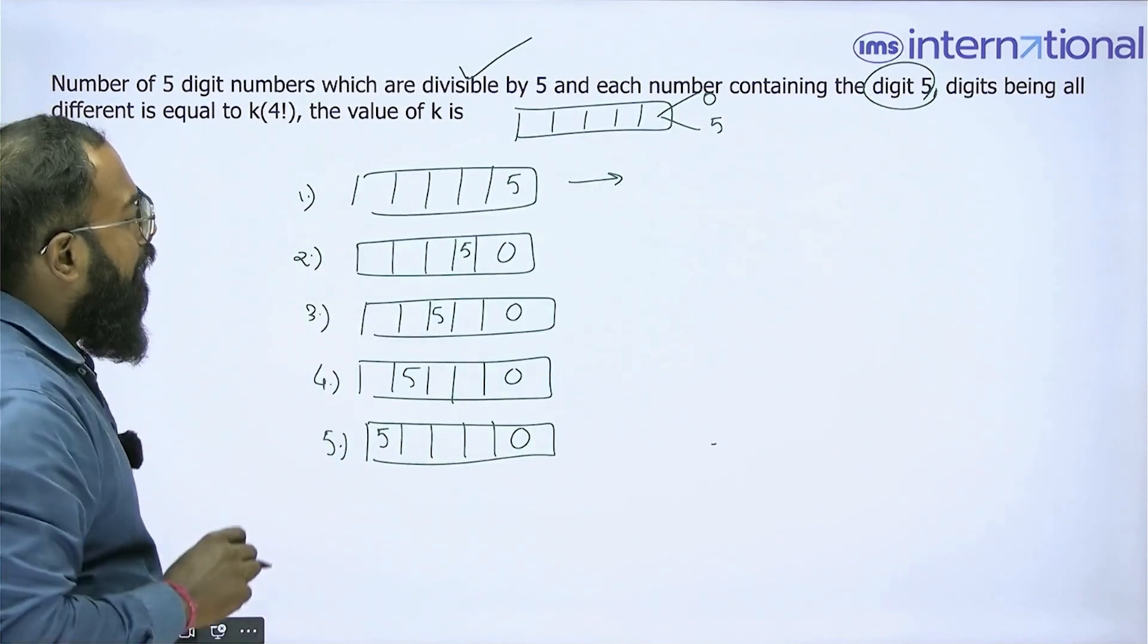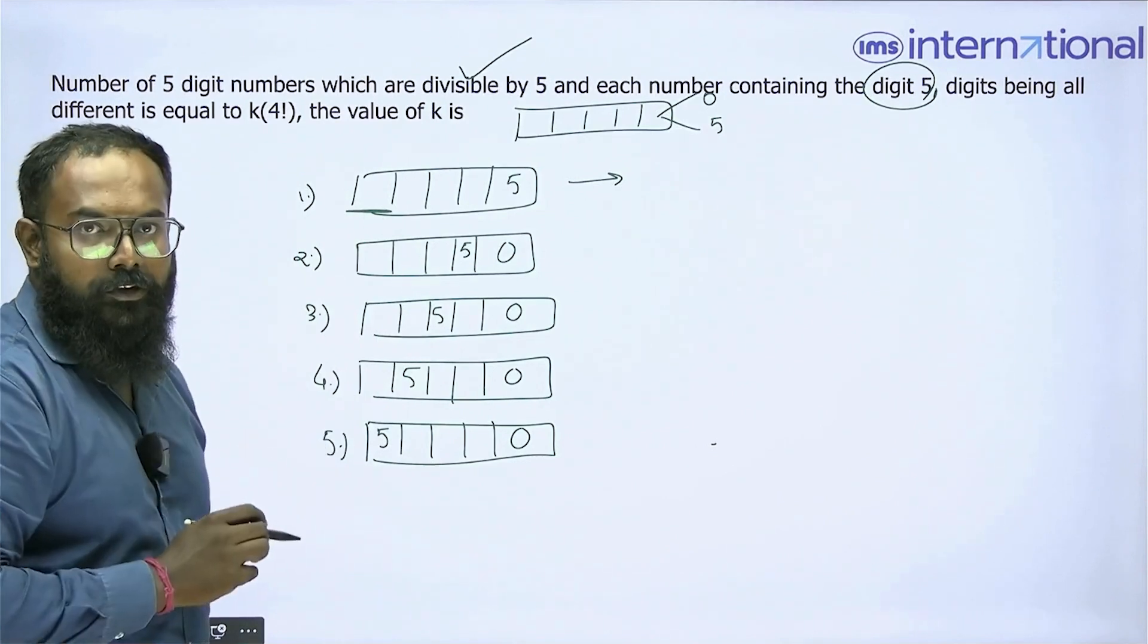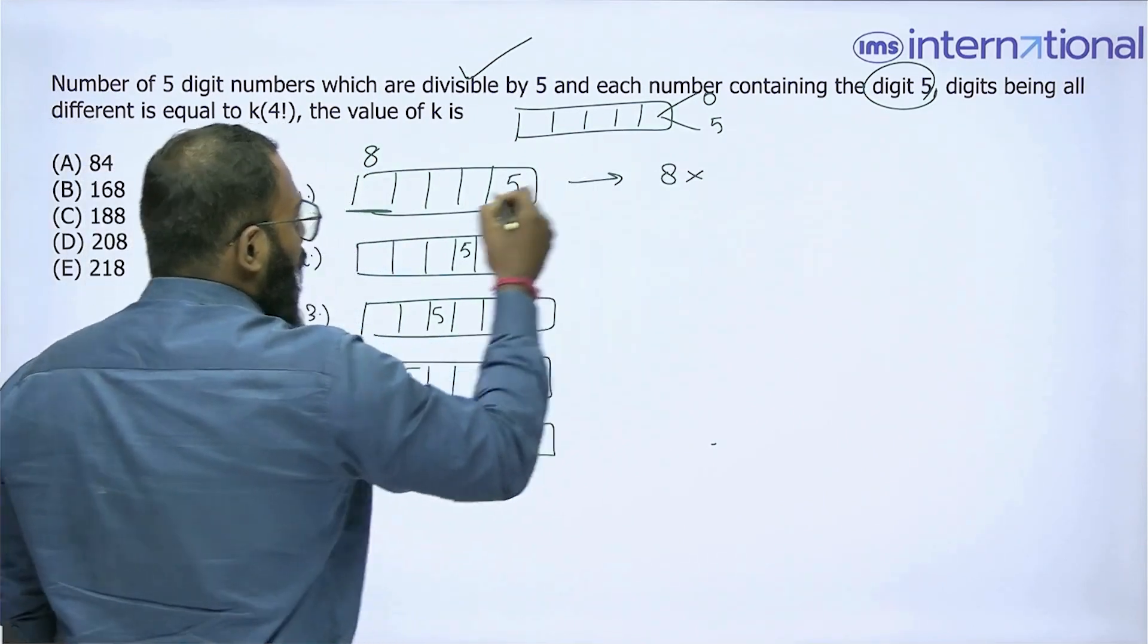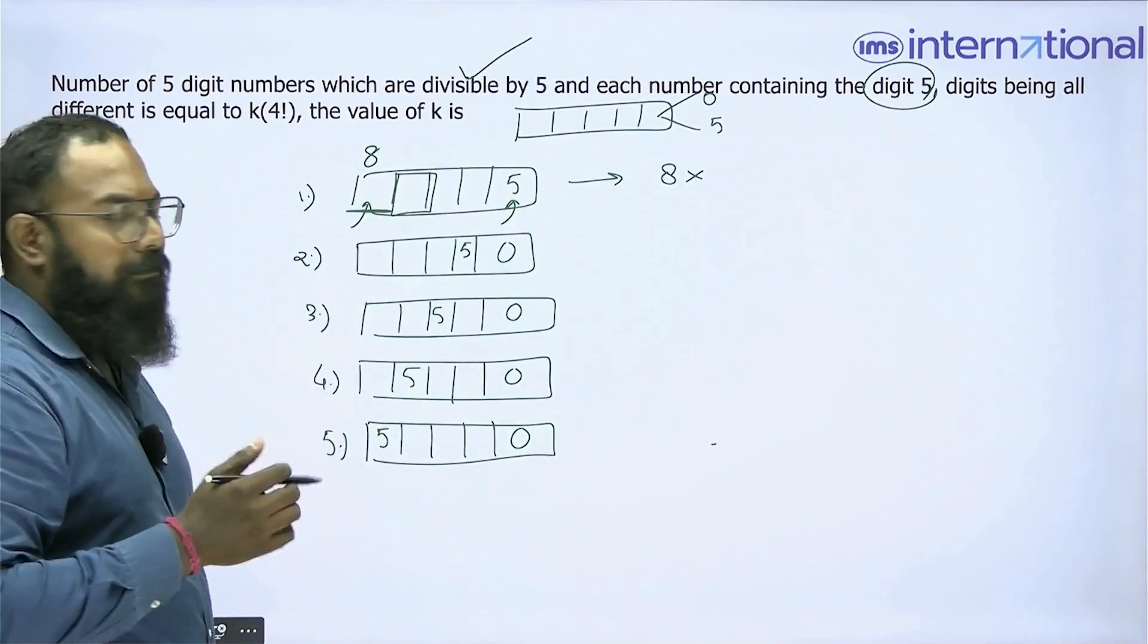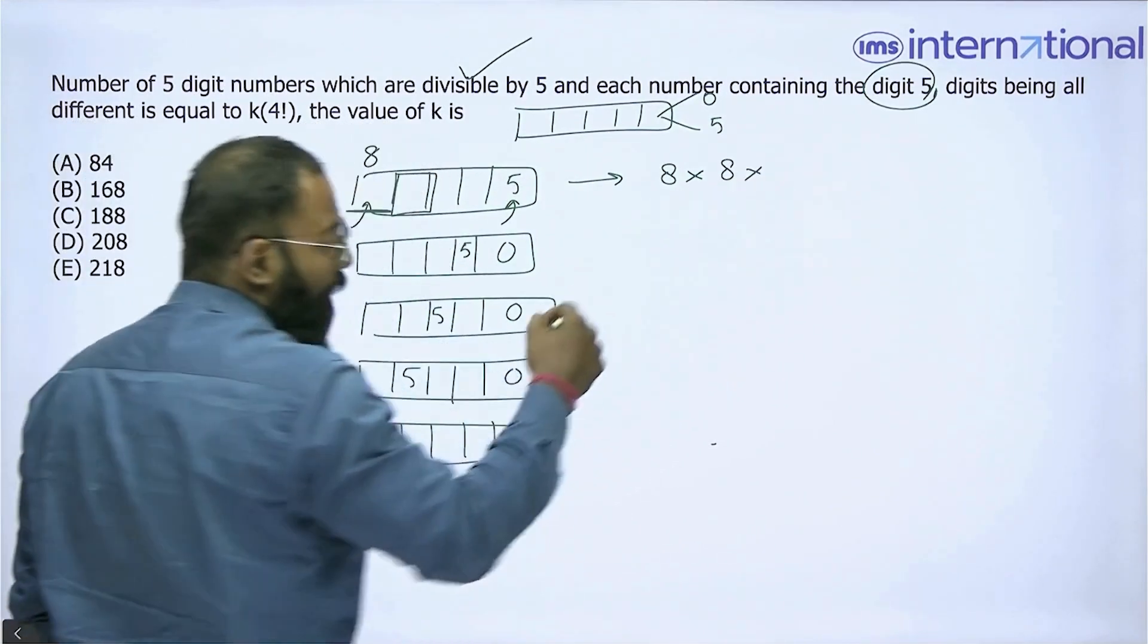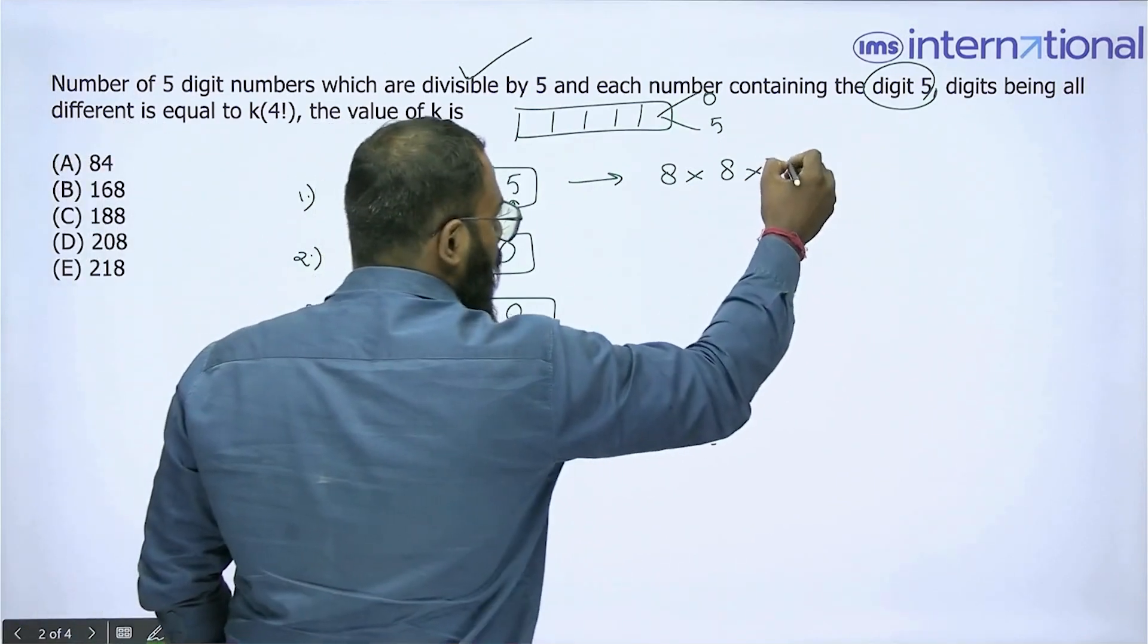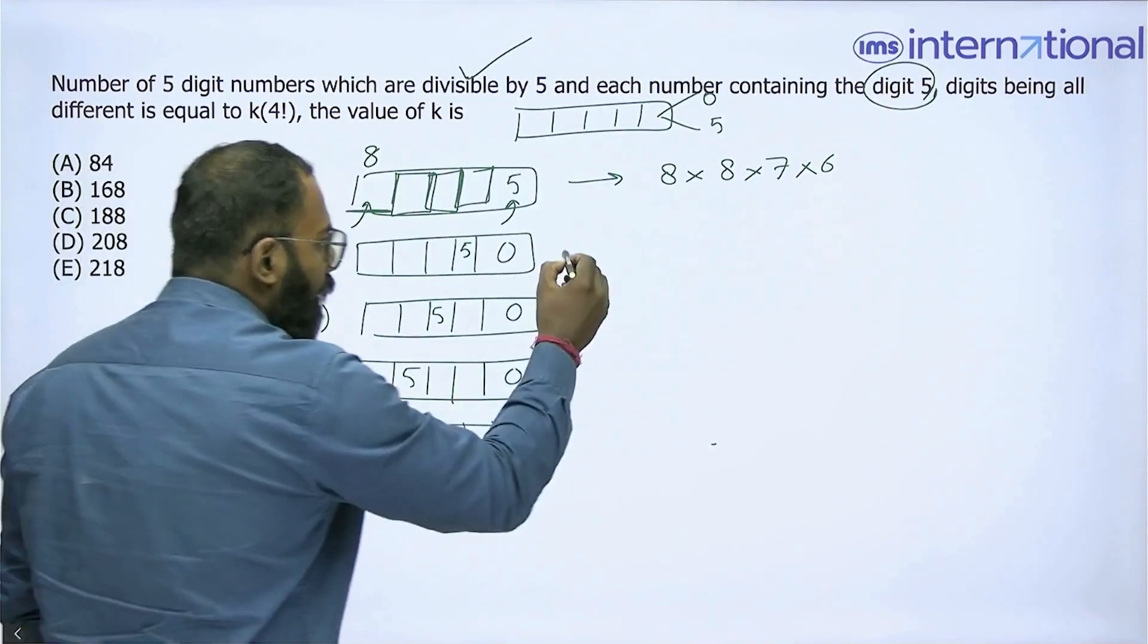How many numbers can I make in case 1? I have used a 5 over here. I cannot use a 0 at this place because using 0 will make it a 4-digit number, so I'm left with 8 more different digits which I can put. Now at this point I've already used 5 and a digit over here, so out of 10 I've used 2 digits. Since repetition is not allowed, I'm left with 8 more options. Then, since I've already used 3 boxes, I am left with 7 options and then 6 options for this particular box.